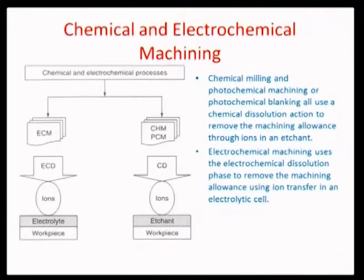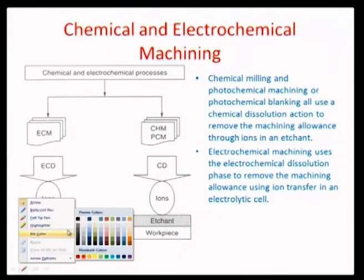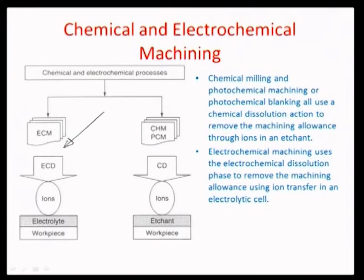We also talked about chemical electrochemical machining processes where electrolysis using Faraday's laws leads to selective removal or deposition of material depending on the requirement. There are associated processes like ESD (electro stream drilling), electrochemical grinding ECG, and electrochemical drilling ECD. Using conducting electrodes where one is the tool and the other is the workpiece, you can selectively remove material by electrolysis.